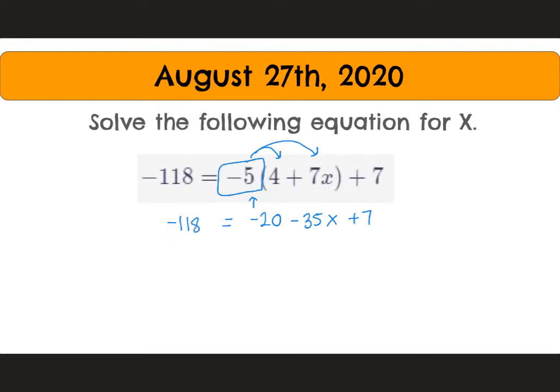Now if we would like, we can combine like terms here. Negative 20 plus 7 will give us negative 13. We'll bring down the negative 35x and bring down negative 118.